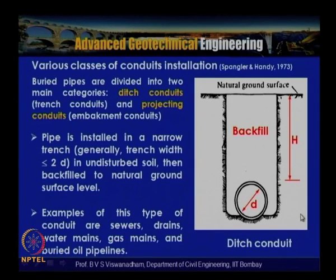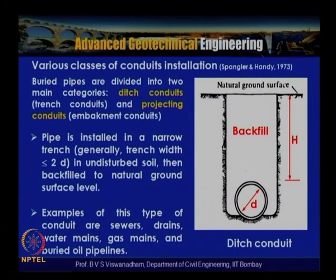Examples of ditch conduits include sewers, drains, water mains, gas mains, and buried oil pipelines. The pipe is installed in a narrow trench with width BD less than or equal to two times the pipe diameter in undisturbed soil, then backfilled to the natural ground surface.